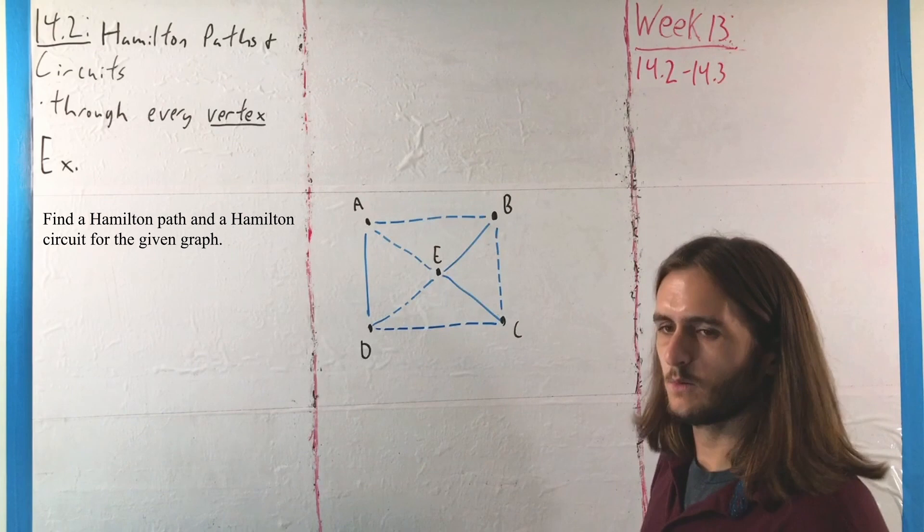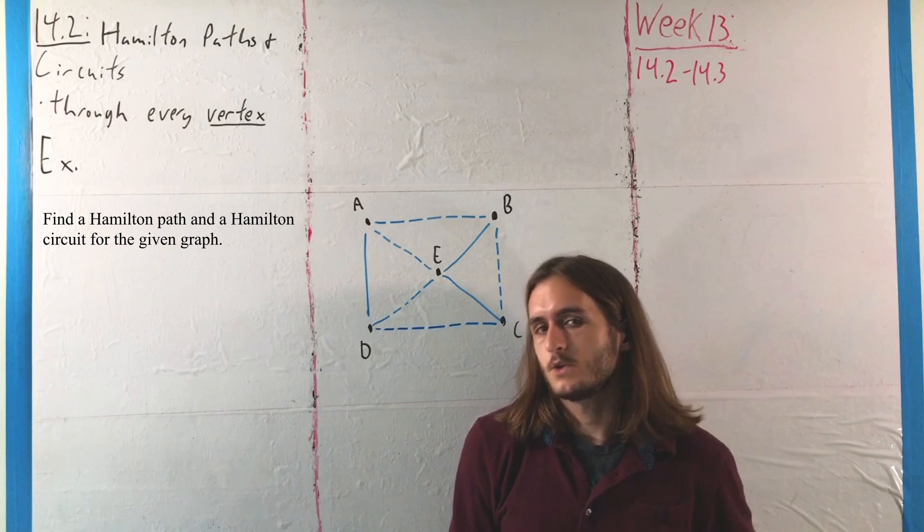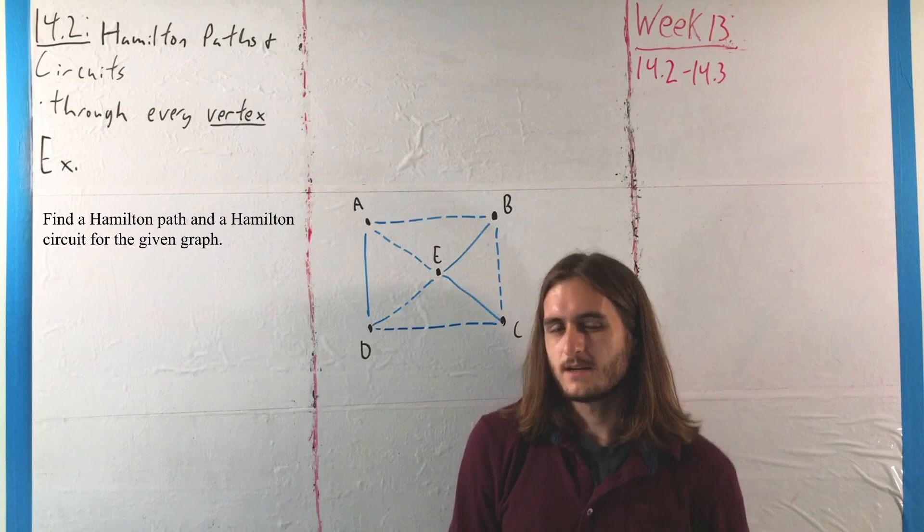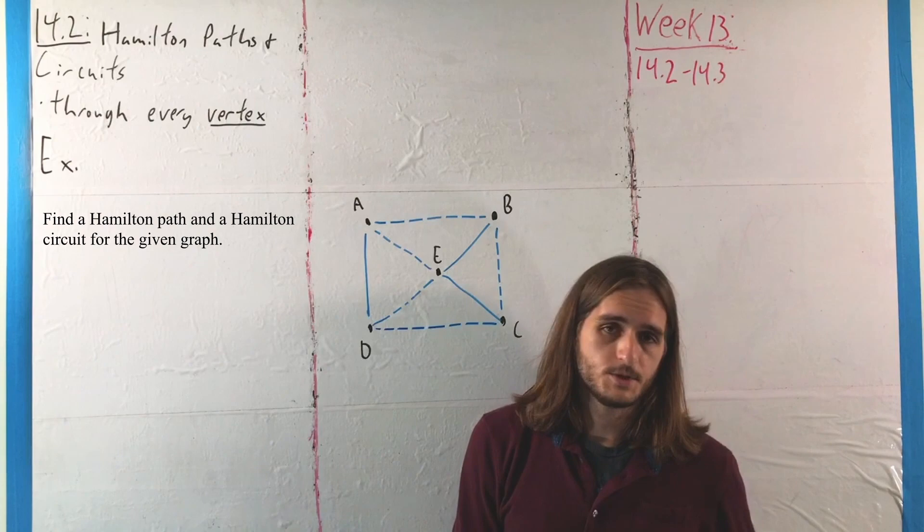It's not necessarily easier though to find Hamilton paths than Hamilton circuits. It's actually generally a lot harder because unlike Euler paths and Euler circuits, we don't have a nice way of being able to identify whether these should exist. We don't have a nice way of being able to tell that they must exist except in some special cases, which is what we're going to be talking about next as ways that we can know to look for and potentially identify Hamilton paths and Hamilton circuits in graphs.